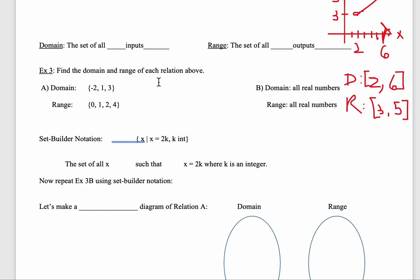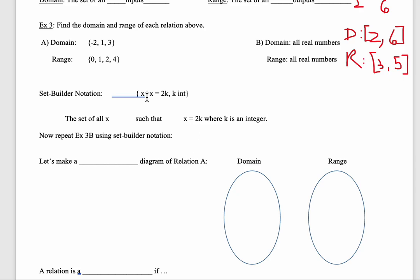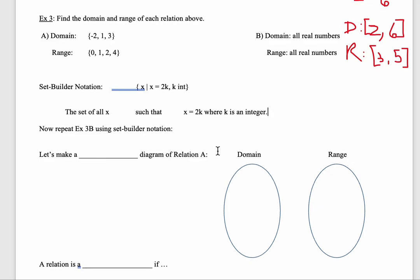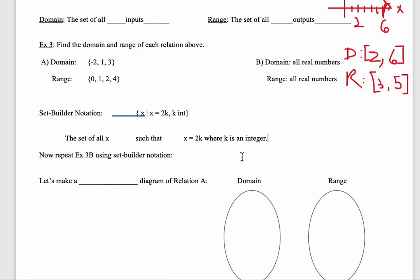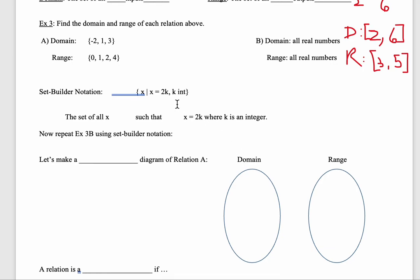Now we can do example 3 for the set builder notation. What is the domain? What is the range? How do we know the domain and how do we know the range? Which one is the domain? Which one is the range? So in this case, your input would be k, right? And then you get an output of x. This means k is your domain, X is your range.